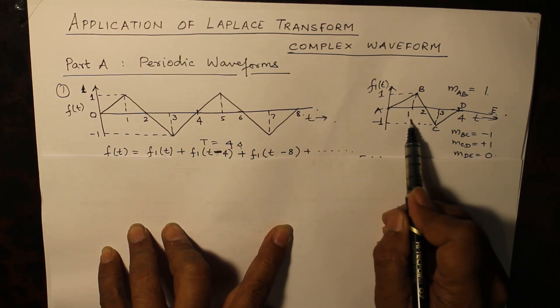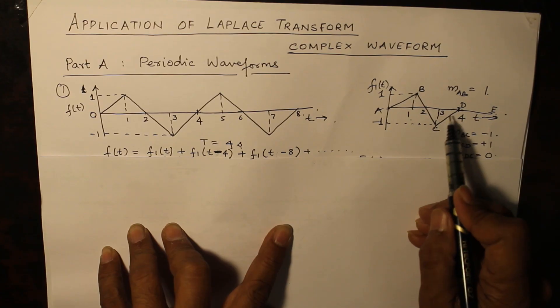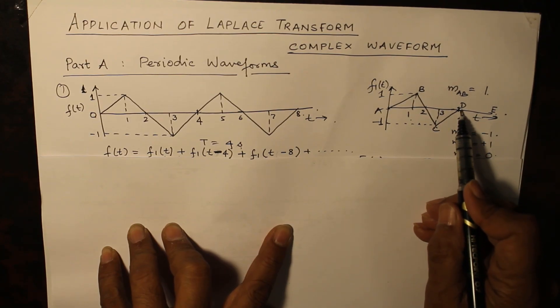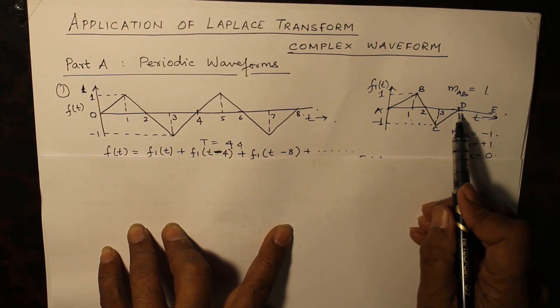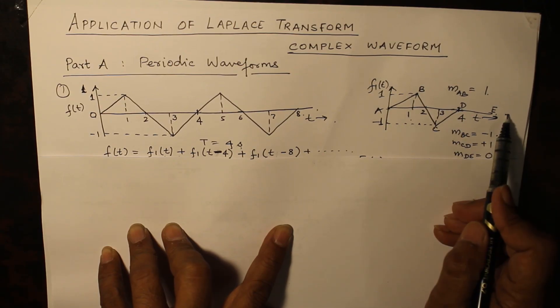The slope of CD is (0-(-1))/(4-3) which is again 1, and the slope of D as you are aware is nil.